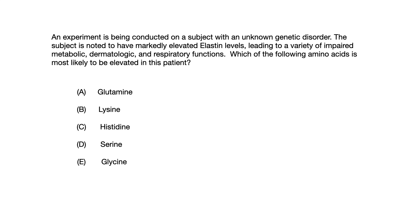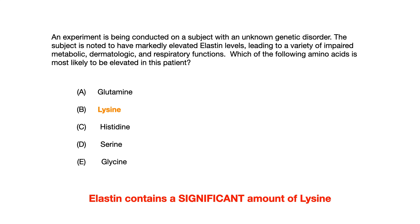So as you can probably tell by looking at this question, this is not a third order question. This is a first order question where you just have to associate something in the vignette with the correct answer. The correct answer here is choice B, lysine. What I'm telling you is that our subject with an unknown genetic disorder has markedly elevated elastin, and what's very important to know for exams is that elastin contains a very, very significant amount of lysine. So as you get changes in elastin, so too do you get changes in lysine.